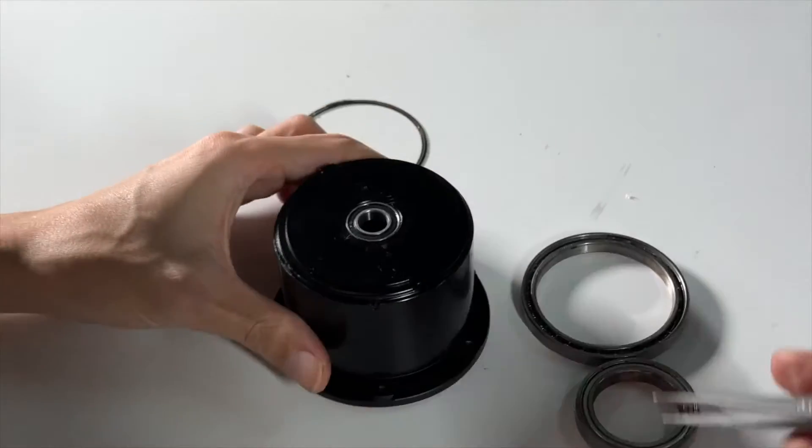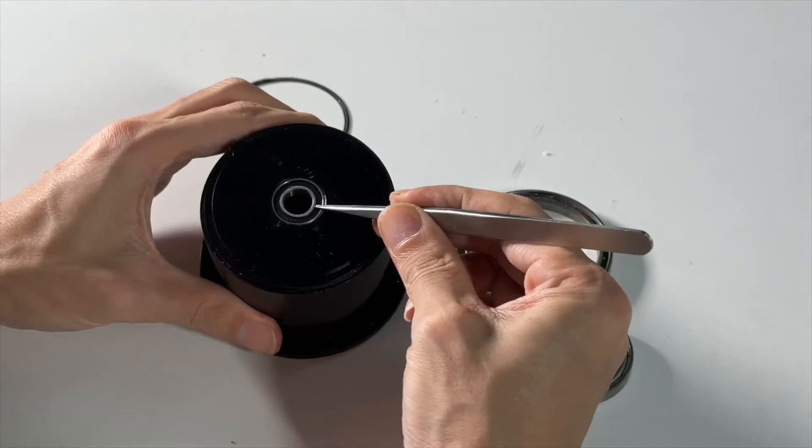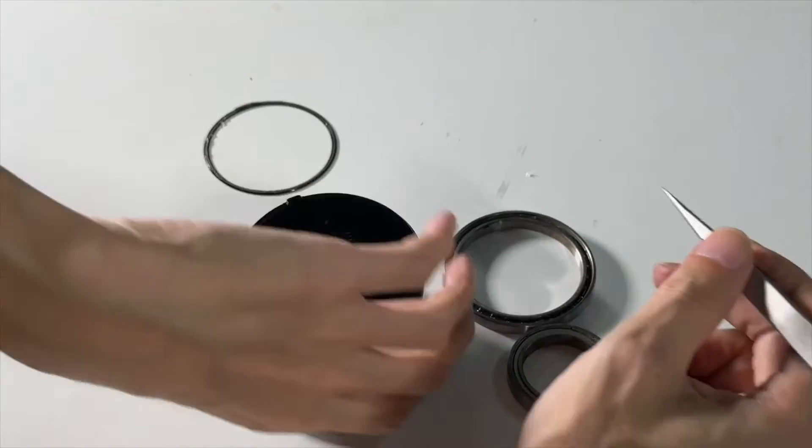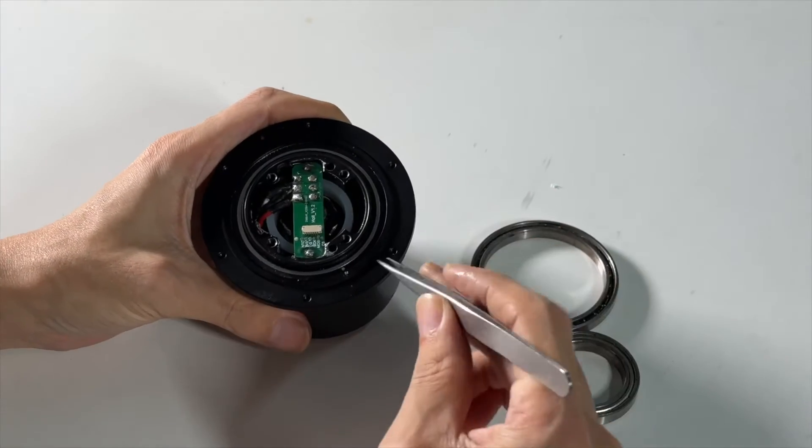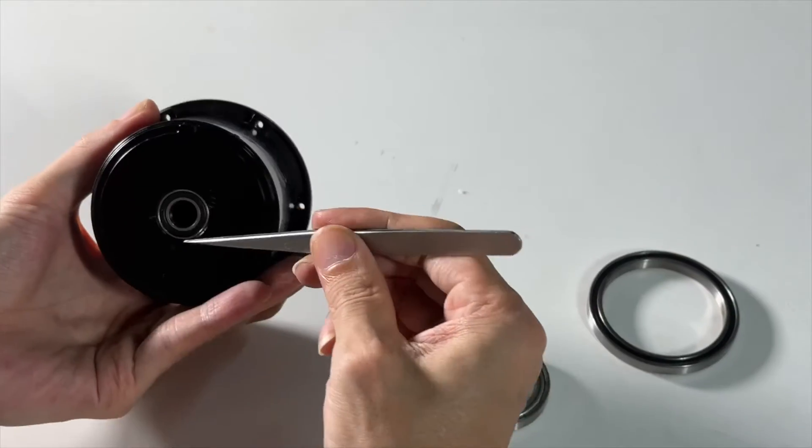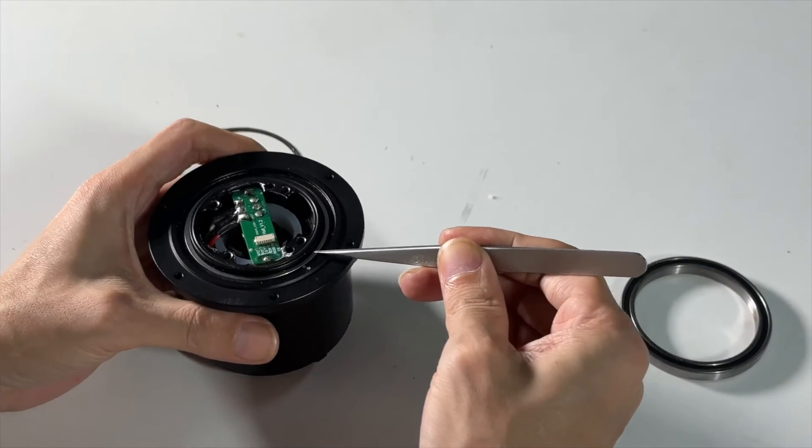The small bearing on the other side of the motor is also equipped with a dust cover. So all bearings on the motor are sealed waterproof and dustproof, and not afraid of contact with rain or sand.